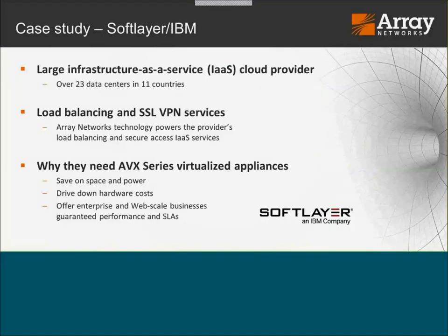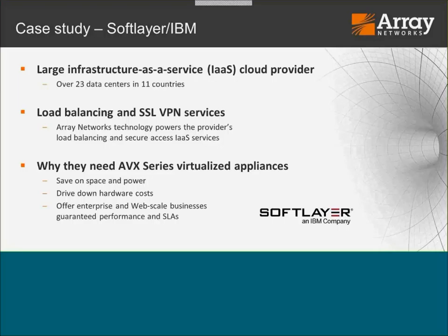A perfect example is the SoftLayer IBM implementation — one of Array's biggest customers and one of the first adopters of the AVX platform. This large infrastructure-as-a-service cloud provider has over 40 data centers, with Array network technology powering their load balancing and secure access infrastructure services. They were using individual dedicated single-purpose Array load balancers to power their dedicated load balancing as a service offering. As they scaled, they needed a more intelligent way to support these services — to consolidate infrastructure where space is at a premium, reducing space, power, and cooling. The AVX platform is right up their alley: drive down hardware costs, save on space and power, and offer enterprise and web-scale businesses guaranteed performance and SLAs.